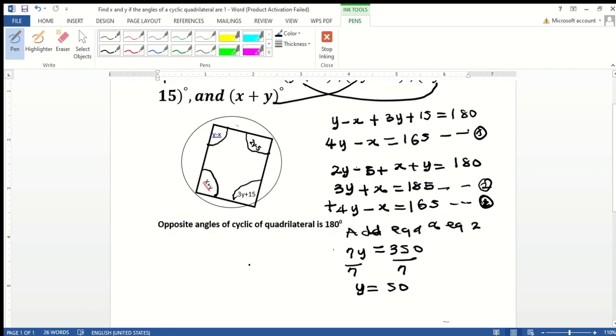To obtain the value of x, we put the value of y into equation two. So we have 3 times 50 plus x equals 185. 3 times 50 gives 150. To obtain x, we move 150 to the right hand side, which gives 185 minus 150, which equals 35. So we can see that the value of x is 35 and y is 50.